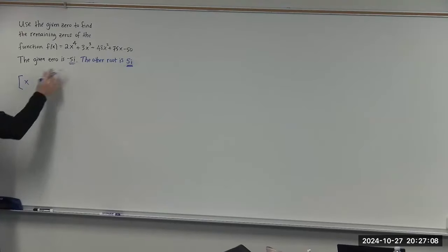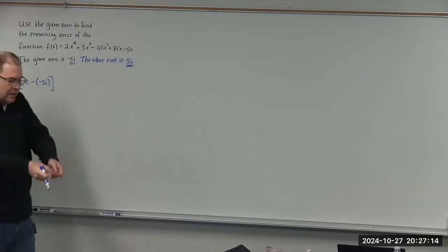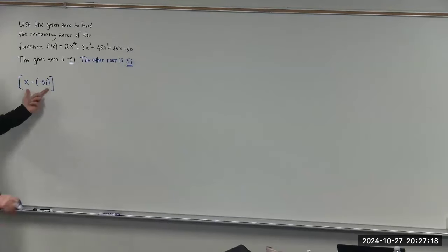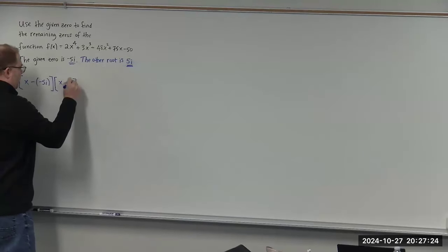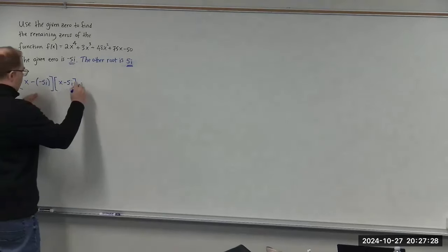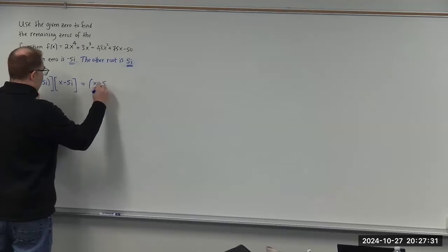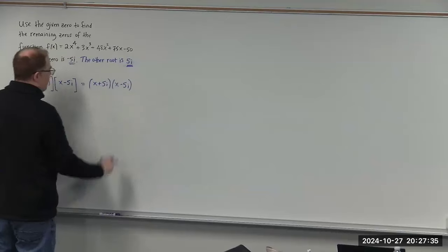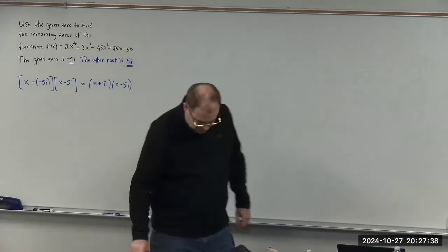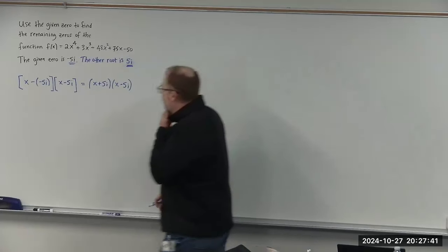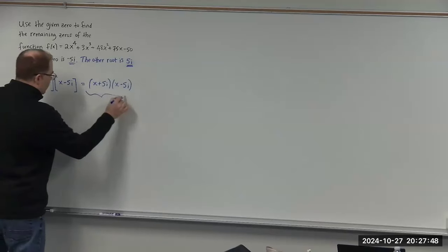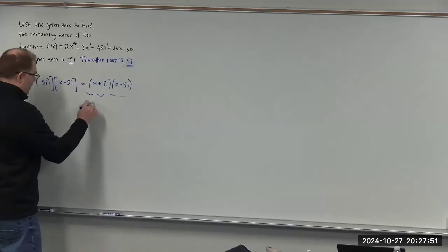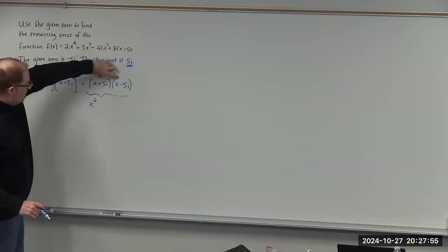From the root negative 5i, we have the factor x minus negative 5i, so that's x plus 5i. And from the root 5i, we have x minus 5i. So it's always x minus whatever the root is. Now let's multiply these out: we have x plus 5i times x minus 5i. We're going to get x squared.